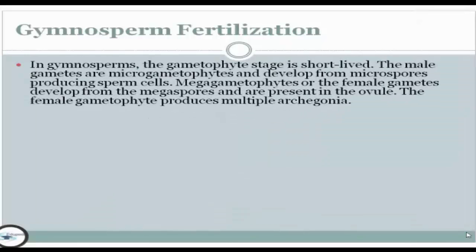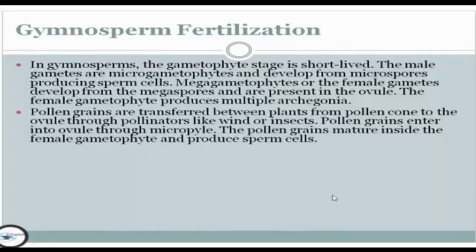Next, we have gymnosperm fertilization. In this process, the gametophyte stage is short-lived. The male gametophytes, or microgametophytes, develop from microspores and produce sperm cells. The megagametophytes, or female gametes, develop from the megaspore and are present in the ovule. The female gametophyte produces multiple archegonia. Pollen grains are transferred between plants from the pollen cone to the ovule through pollinators like wind or insects, entering the ovule through the micropyle.